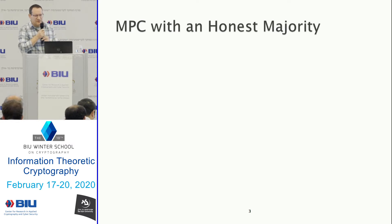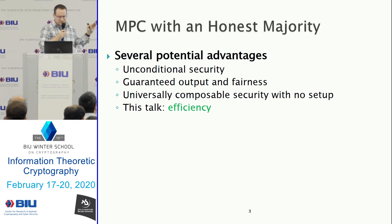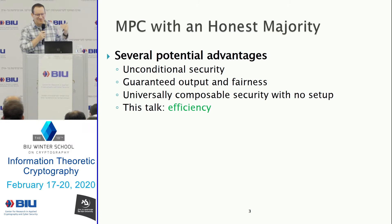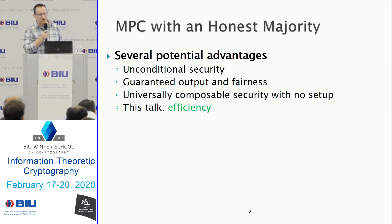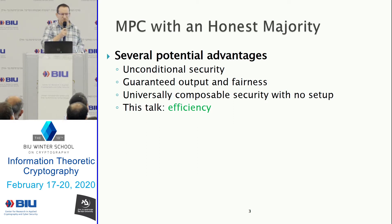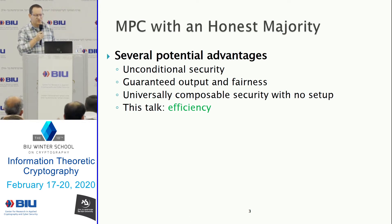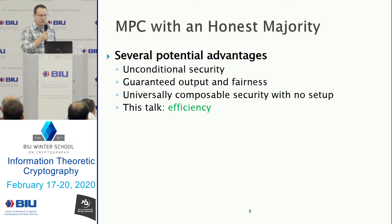We're continuing directly in the same setting that Gilad talked about: general MPC with an honest majority. Compared to the competition without honest majority, we have the following advantages: we can get unconditional, information-theoretic security without relying on unproven assumptions. We can get guaranteed output delivery and fairness, nice composability properties with no setup. But the main purpose of this talk is to show that these protocols can also be efficient — much more efficient than the protocol you saw in the previous talk.